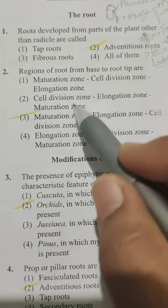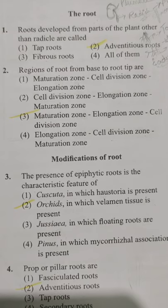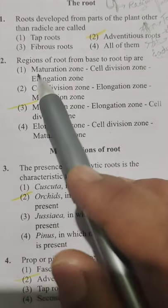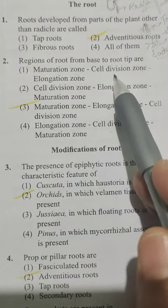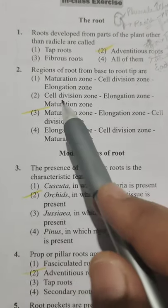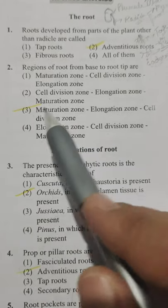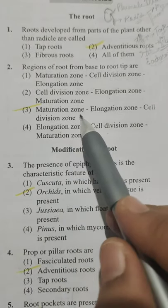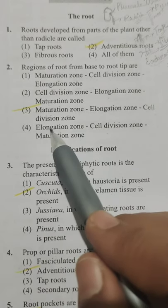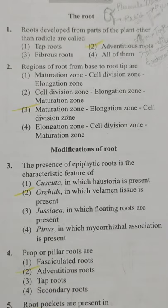Next question: the regions of roots from base to root tip are — Option 1: maturation zone, cell division zone, elongation zone; Option 2: cell division zone, elongation zone, maturation zone; Option 3: maturation zone, elongation zone, cell division zone; Option 4: elongation zone, cell division zone, maturation zone.